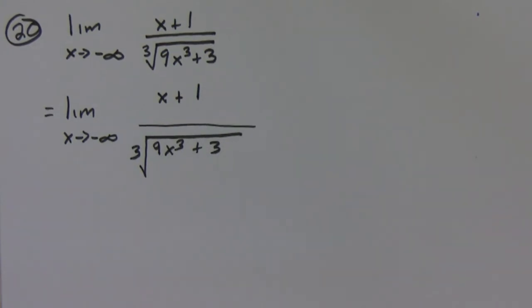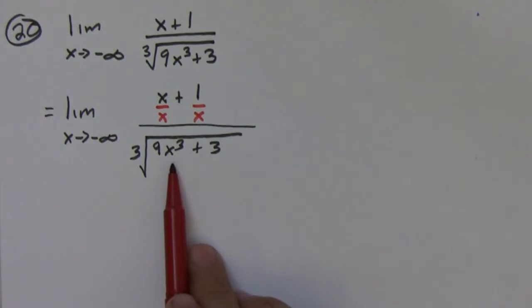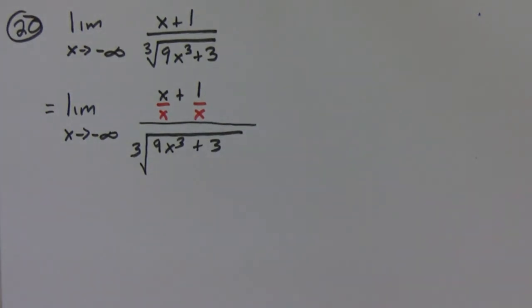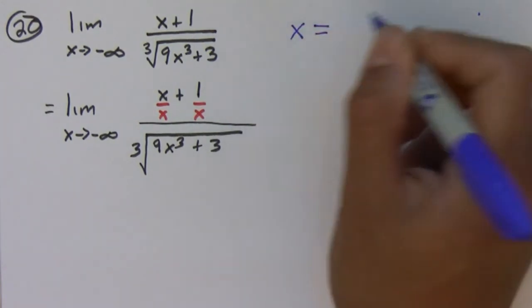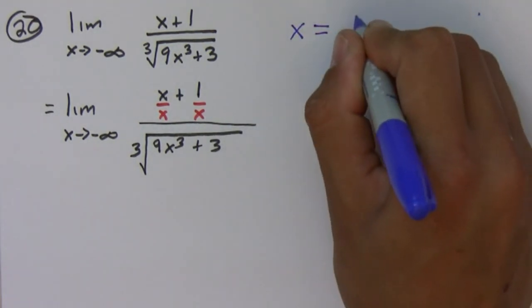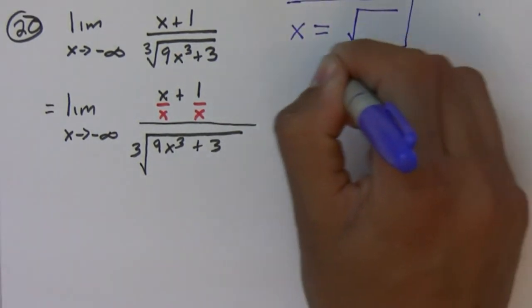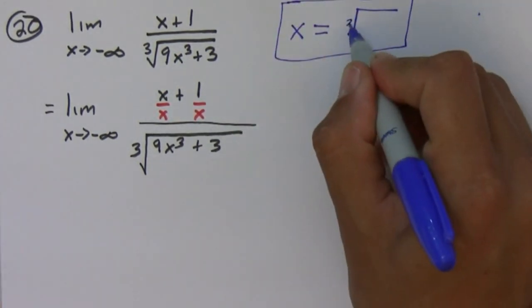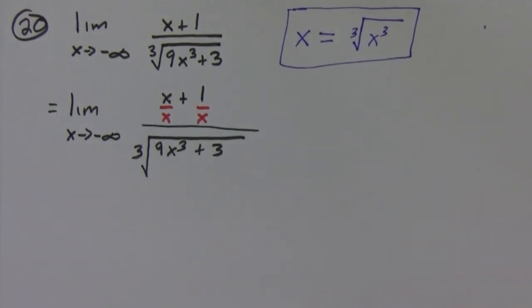I'm going to divide here by x on the numerator. Then the denominator, I want to bring it inside. So you have to think of what's going on. You have to say that x is equal to the cube root of x cubed. Now this is true, but you have to be careful with the sign here.